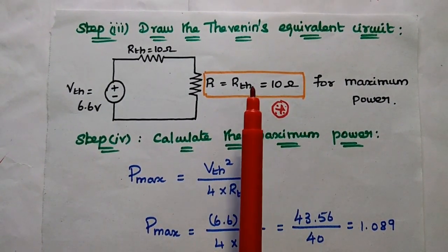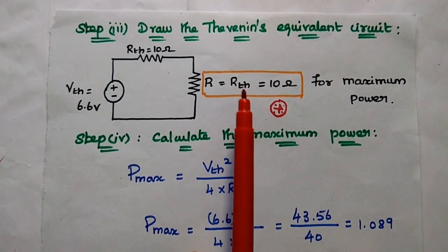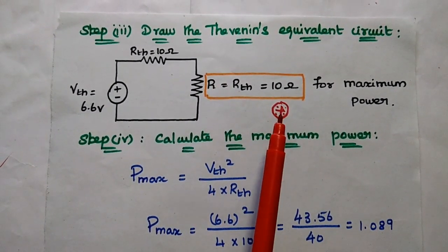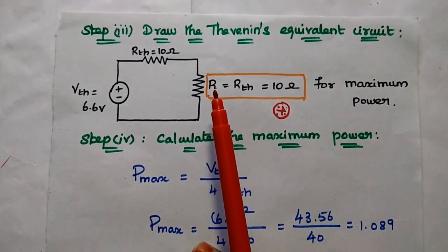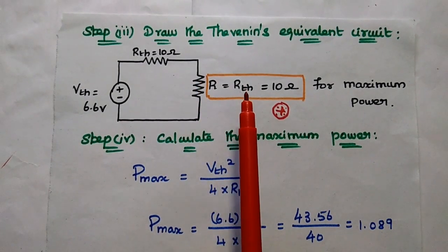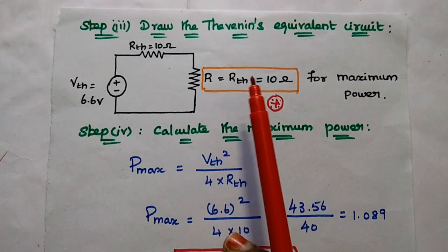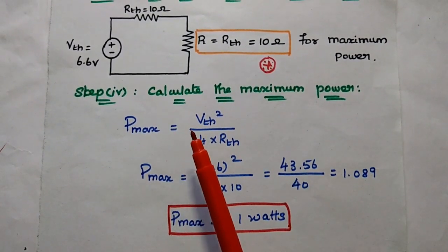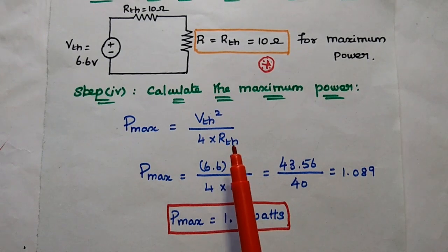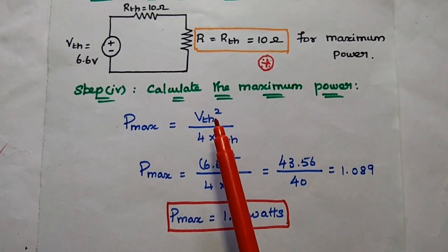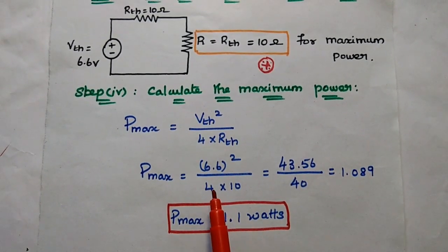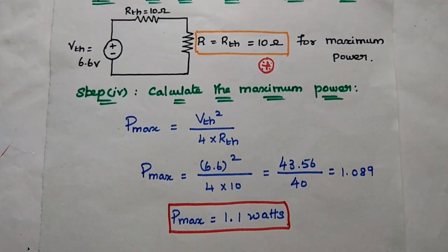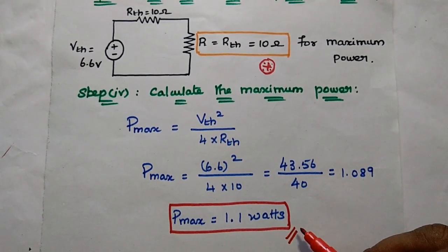For maximum power transfer, the condition is that the load resistor equals the Thevenin's equivalent resistance. So the load resistor value is 10 ohm — for maximum power transfer the load resistor is always equal to the internal resistance. After getting the load resistance as 10 ohm, we calculate the maximum power using the formula Vth squared divided by 4 times Rth. Substituting Vth = 6.6 V and Rth = 10 ohm, we get 1.089 W, which can be written as approximately 1.1 watts.